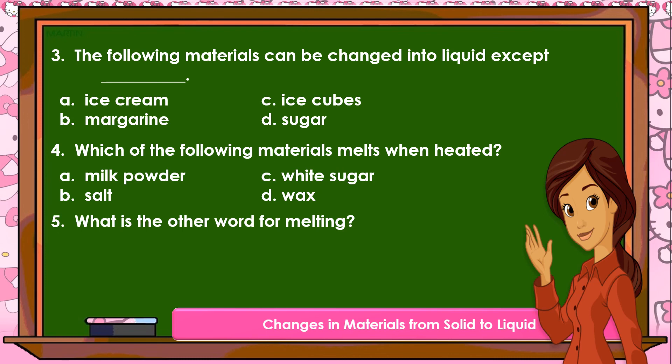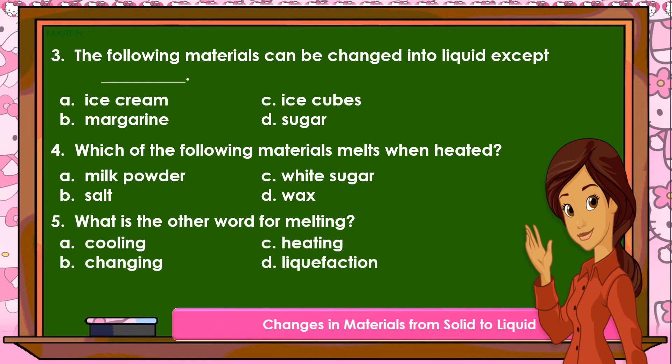And number 5: What is the other word for melting? A. Cooling. B. Changing. C. Heating. D. Liquefaction.